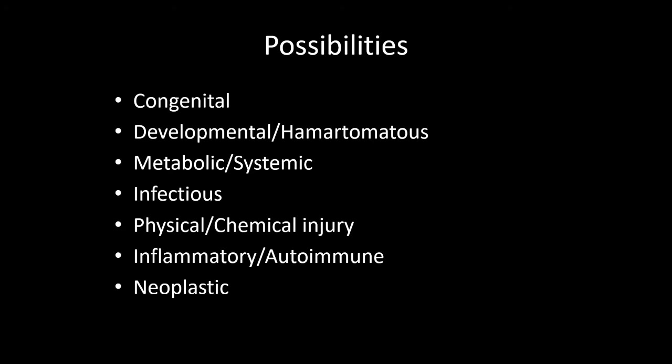Using broad categories of pathologic entities, we can begin eliminating some. It's unlikely this lesion is congenital — the patient is 52 and has only had symptoms for eight months; a congenital lesion would likely have presented earlier in life. Glial heterotopia would be a consideration if the patient were younger or asymptomatic. Specific infections such as rhinosporidiosis, rhinoscleroma, mucormycosis, and acute rhinosinusitis are usually significantly more destructive. Physical and chemical injury are also excluded, as these are usually significantly more destructive due to vascular or structural collapse from trauma or chemical irritants such as certain narcotics.